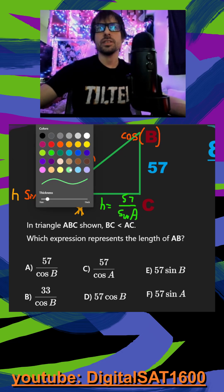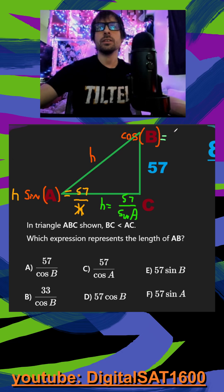And then for cosine of B, just for the sake of solving for it, this is going to be equal to 57 over H. Multiply both sides by H. That gets rid of my denominator. And finally, H is going to be equal to 57 over cosine of B.